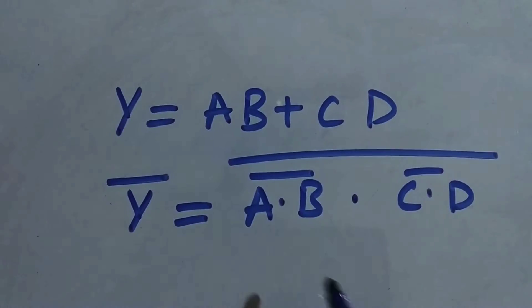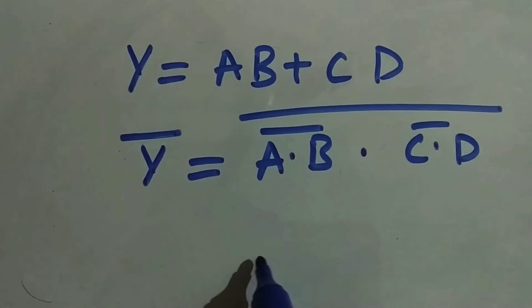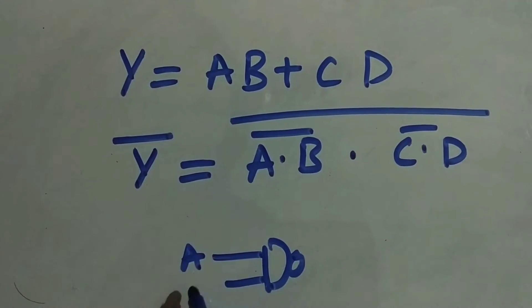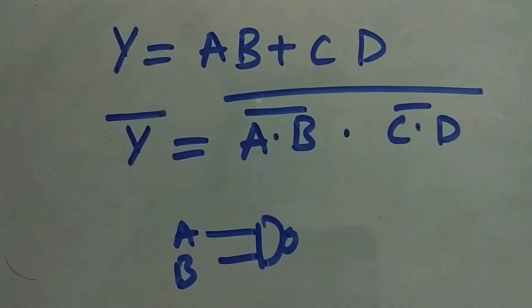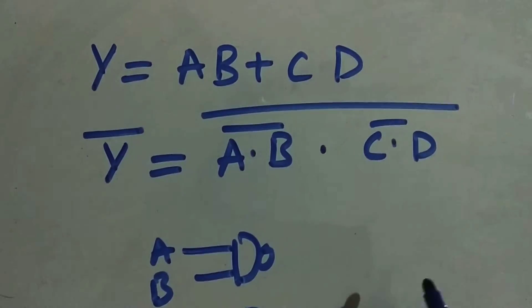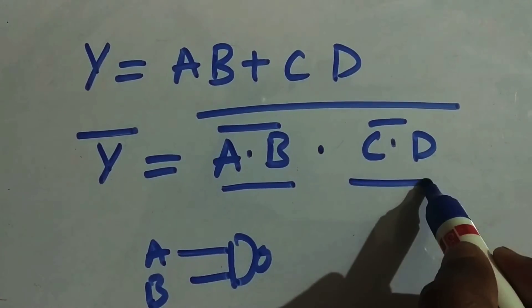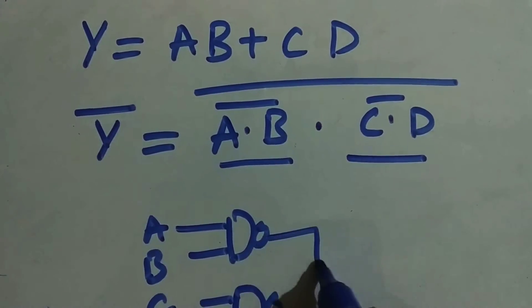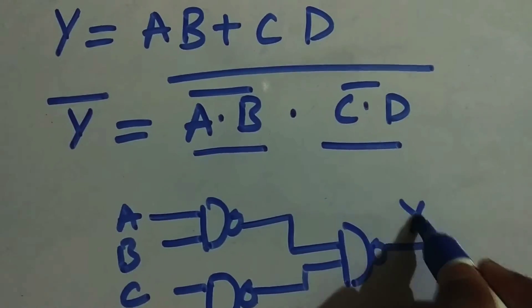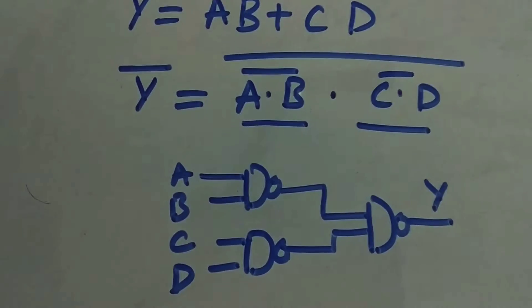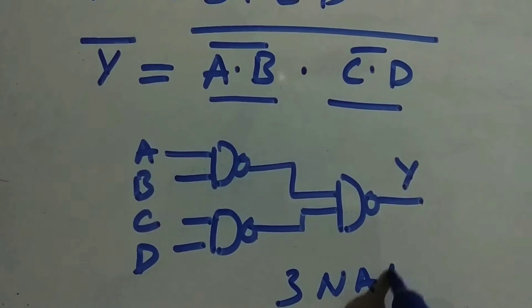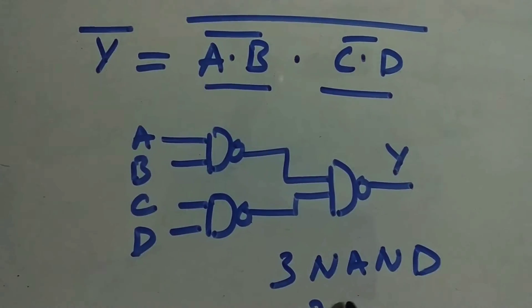Let's draw the circuit. First, I draw a NAND gate for A dot B whole bar. Then I draw another NAND gate for C dot D whole bar. Now we need one more NAND gate because these two expressions are ANDed together. That final NAND gate gives us Y. So using three two-input NAND gates, we can implement the expression Y = AB + CD.